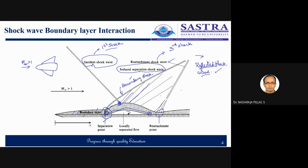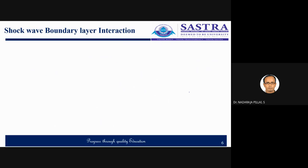At the reattachment region the boundary layer thickness changes, and there is a high temperature increase — local aerodynamic heating. The scale and intensity of the interaction depends entirely on whether the boundary layer is laminar or turbulent. Understanding the fluid dynamic aspects and discussing the mathematical details of the interactions are really complex, and the full prediction of shock wave and boundary layer interaction is still a state-of-the-art research problem. Thank you.